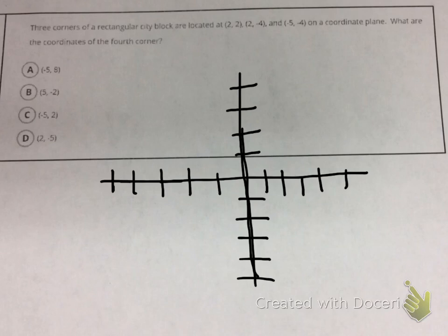So the first one we're plotting is 2 comma 2. So if I go over to my x-coordinate, 1, 2, and then up y, 1, 2, my first corner is going to be right there, approximately.